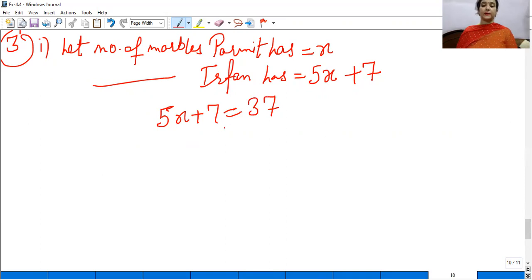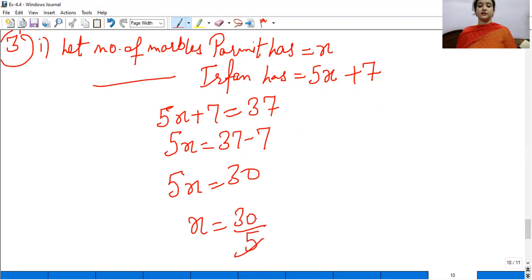And we have also said that Irfan has 37 marbles. So, how many marbles do we need to find? 37 minus 7, that is 30. So, x equals 30 upon 5, which is 6. So, Parmeet has 6 marbles.